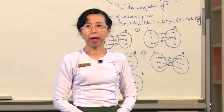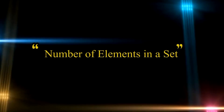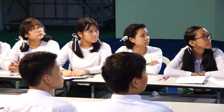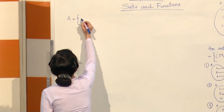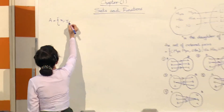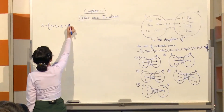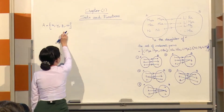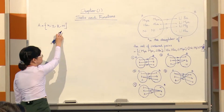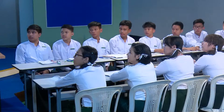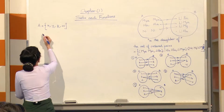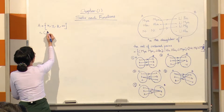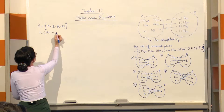The number of elements in the set A is equal to the set of X, Y, Z, W. So the cardinality, the number of A, is equal to 4.